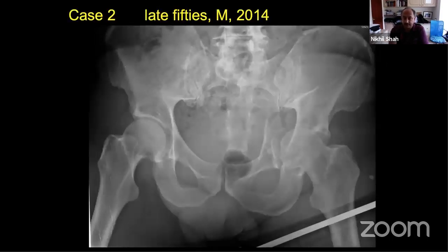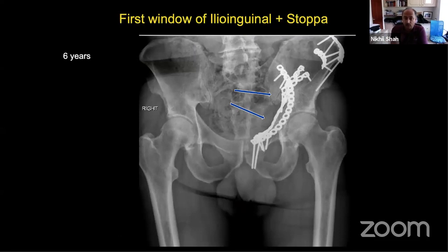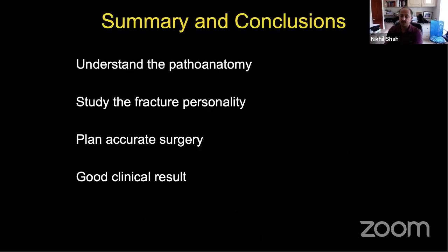Another case — a gentleman in his late 50s with a quite comminuted associated both column fracture, dealt with through the anterior intrapelvic approach (Stoppa) and the first window of ilioinguinal, with six-year follow-up. A medial plate was used to buttress the medially displaced quadrilateral plate, a spring plate to keep it back, and an anterior column plate. In summary, understanding pathoanatomy and studying the fracture personality carefully is essential for accurate surgical planning and achieving a good clinical result.